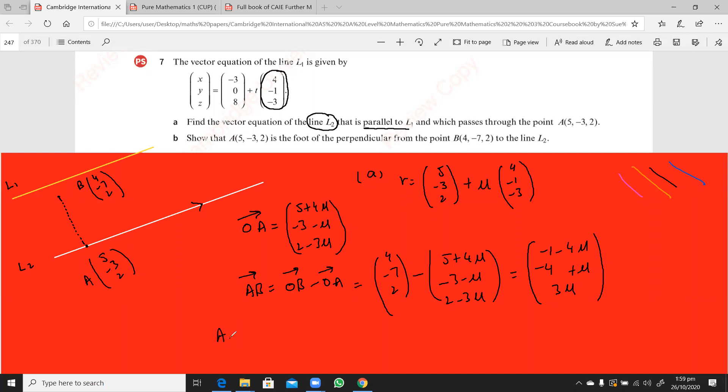So now let's find AB dot this direction vector, which is 4, minus 1, minus 3. So I'll be putting that equal to 0. So now I have AB is minus 1 minus 4 mu times 4 is minus 4 minus 16 mu. Then this minus 1 into this is plus 4 minus mu, and this is minus 9 mu, that is equal to 0.